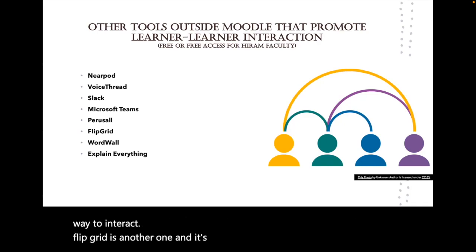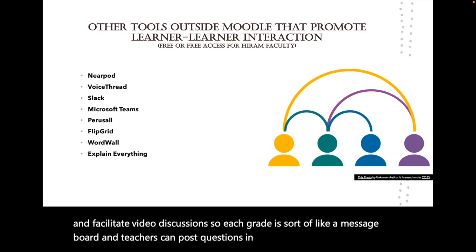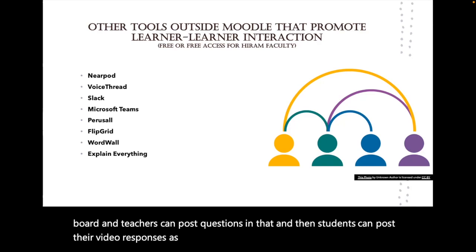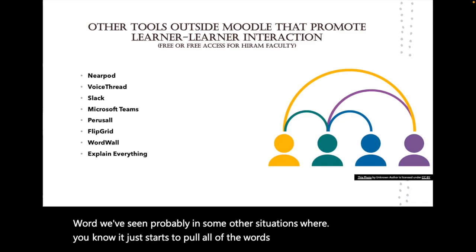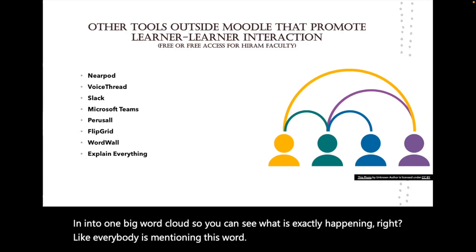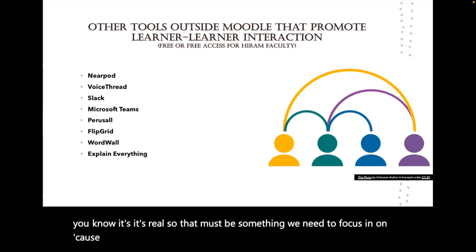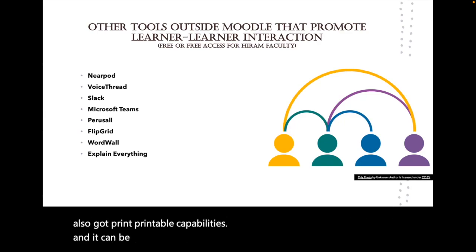Flipgrid is a website that allows others to create grids and facilitate video discussions — each grid is like a message board where teachers post questions and students post video responses. Wordwall pulls all the words people are using in discussion posts into one big word cloud, so you can see what's exactly happening. If everybody is mentioning a word, that must be something to focus on. It's interactive, has printable capabilities, and works on any web-enabled device, including the iPad.